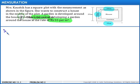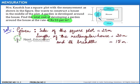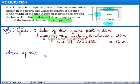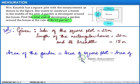Let's begin the solution. It is given that the side of the square plot is 25 meters, the length of the rectangular house is 20 meters, and its breadth is 15 meters. We need to find the area of the garden, which can be found by subtracting the area of the house from the area of the plot. Therefore, area of the garden equals area of the square plot minus area of the rectangular house.